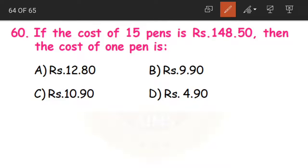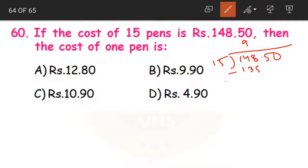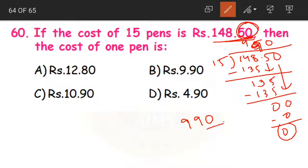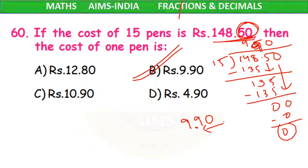Coming to the last question for today. If the cost of 15 pens is 148.5 rupees, find the cost of 1 pen. We divide: 15 nines are 135, remainder 1; bring 5, 15 nines are 135, remainder 0; bring 0, 15 zeros are 0, remainder 0. Quotient is 990. As the given question has two decimal places, we place the decimal point after 2 digits from the right — so 9.90 becomes our correct answer. That is option B. And with this we have come to the end of today's class.